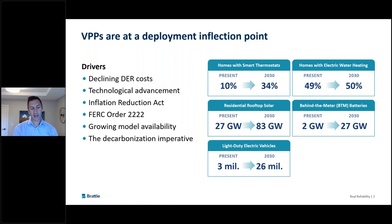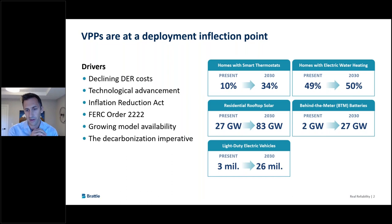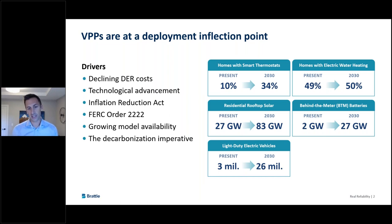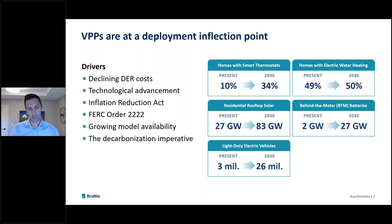We're also seeing growth in availability of electric vehicles and other distributed energy technologies. Behind all of this is the decarbonization imperative, driving a ton of activity on the policy, technology development, and regulatory sides of the industry. Analyst projections show that between now and 2030, depending on which DER we look at, we're generally seeing an increase of between 3x and 10x the level of adoption we have today — a potential explosion in the eligible customer base that could be participating in VPPs going forward.